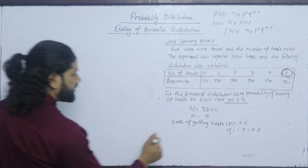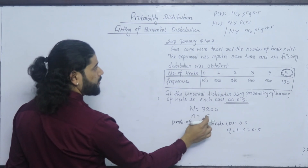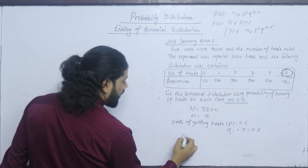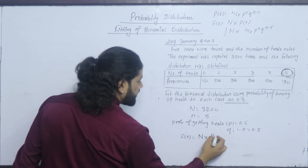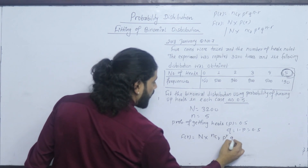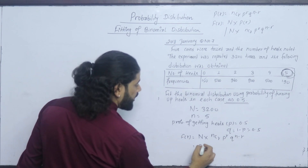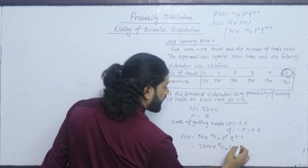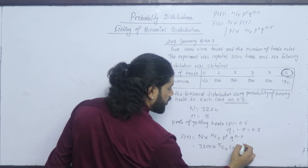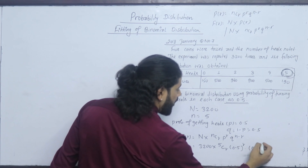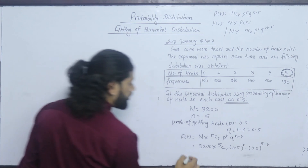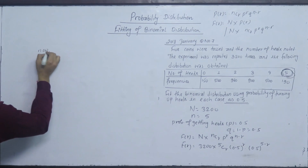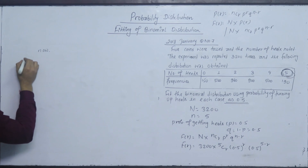Now we are going to solve the question. N equals 3200, small n equals 5. The general formula is F(R) equals N into nCr into P to the power R into Q to the power N minus R, with n equals 5 and p equals q equals 0.5, so Q equals 0.5 to the power 5 minus R.